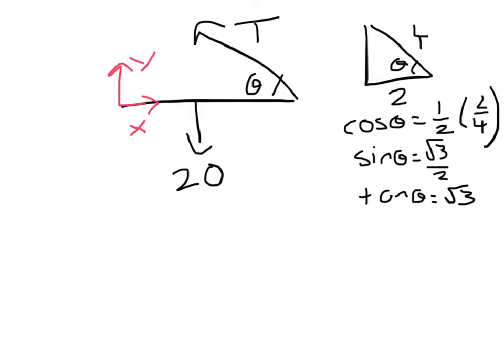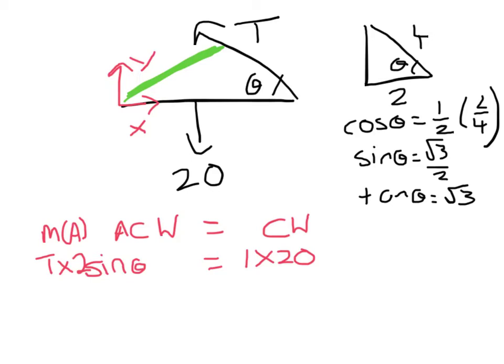Taking moments about A, anti-clockwise moments will equal clockwise moments. The 20-unit force is going to be working in the clockwise direction, and it will be 1 times 20 for force times distance. The tension is pulling it anti-clockwise, and the distance that we're interested in is the distance marked on the diagram. So the moment of this force will be tension times 2 sin theta. So that tells me that T times root 3 equals 20, so the tension is 20 over root 3. And rationalising the denominator gives us 20 root 3 over 3.